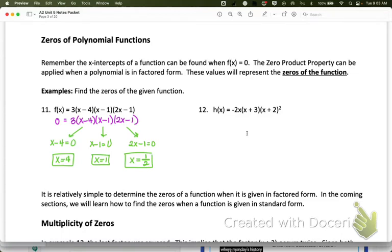Now on number 12, same thing. I'm going to set each of the factors equal to 0. Now the GCF, or essentially the term that's out in front this time, this negative 2x, that's different than the first one. The first one we just had a 3 that didn't have an x on it, so we didn't have to do anything with it. But this one, the negative 2x, does give us a solution. So we have negative 2x equals 0, x plus 3 equals 0. And then the fact that this one is squared doesn't matter, because as long as it's 0, 0 squared is still 0. So all I need is for x plus 2 to equal 0. We can ignore the squared for now. So our solutions here are going to be x equals 0, x equals negative 3, and x equals negative 2.